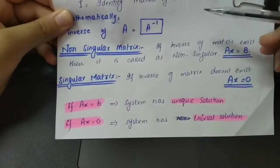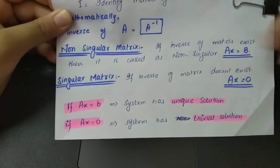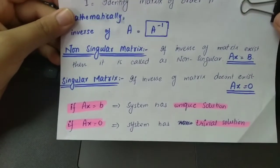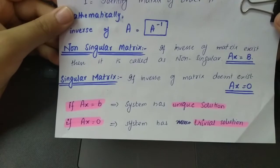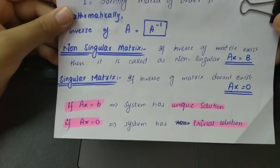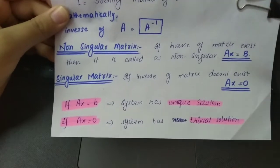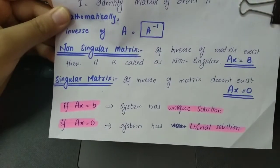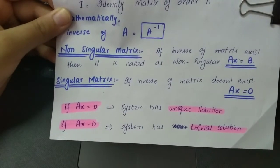Now let's see what non-singular matrices are. If the inverse of a matrix exists, then we say that it is a non-singular matrix. And if the inverse of a matrix does not exist, then we simply say that it is a singular matrix.